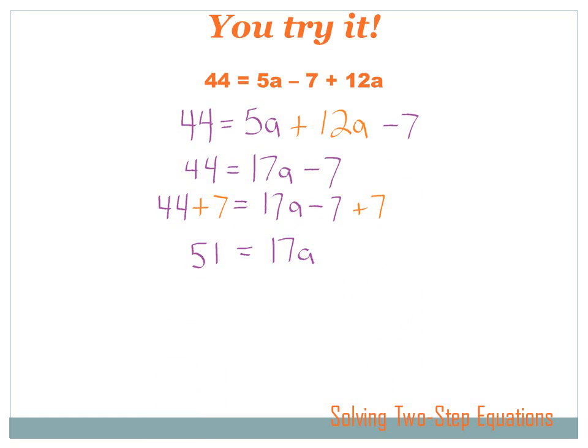44 equals 5a plus 12a minus 7. Can I do that? Can I move that 12a over to there? And then move the minus 7 over to there? And have I changed anything? Well, no, I haven't. Because of the commutative property of addition, I can move those numbers around and not change the results.